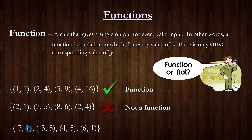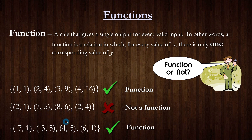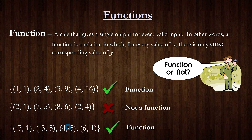One more example. An x value of negative 7 corresponds only to a y value of 1, negative 3 only goes with 5, 4 only goes with 5, and 6 only goes with 1. Don't let it throw you off that two different x values correspond to the same y value — that's okay. What matters is that negative 7 only goes with one y value, six only goes with one y value, and so on. So this is indeed a function.